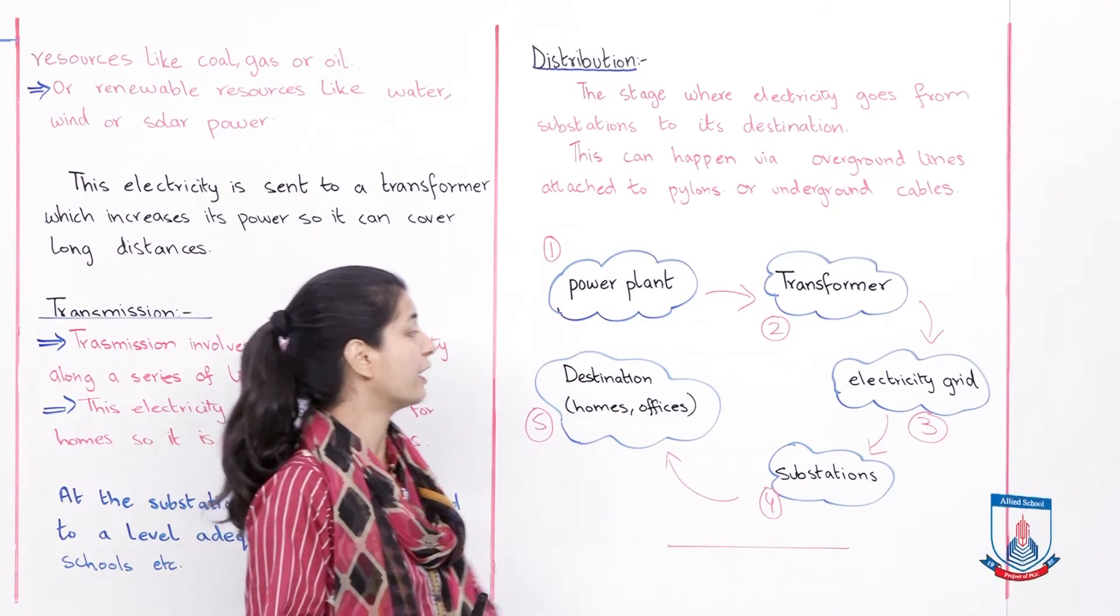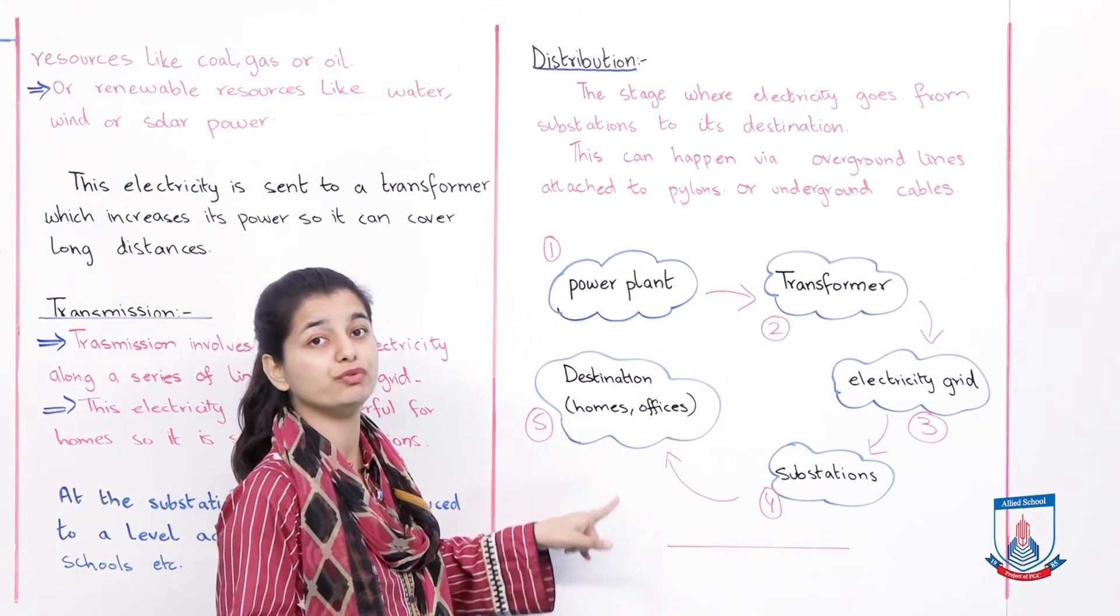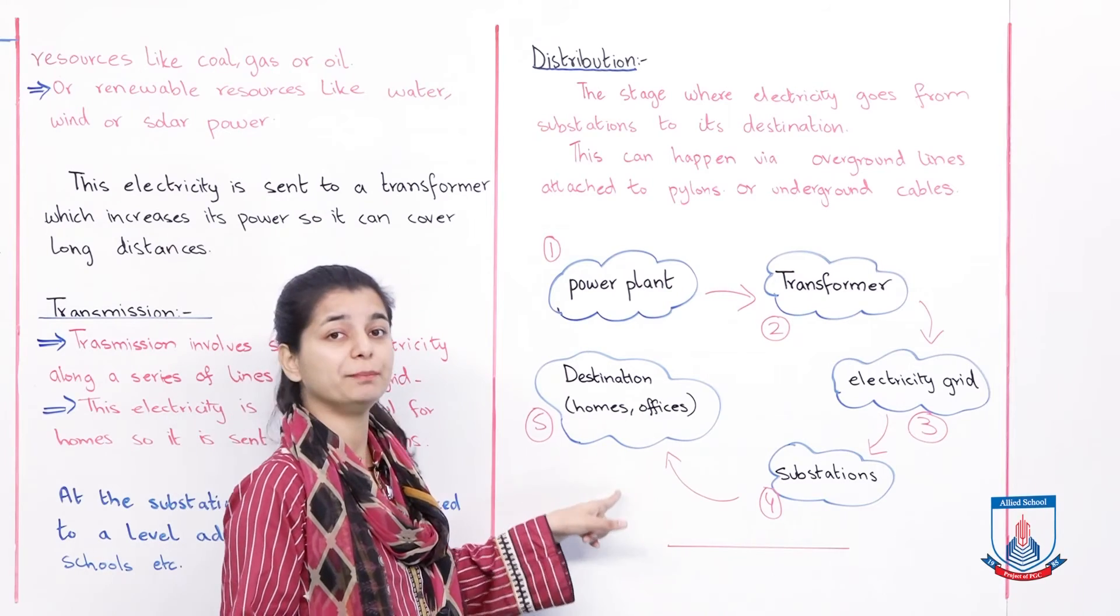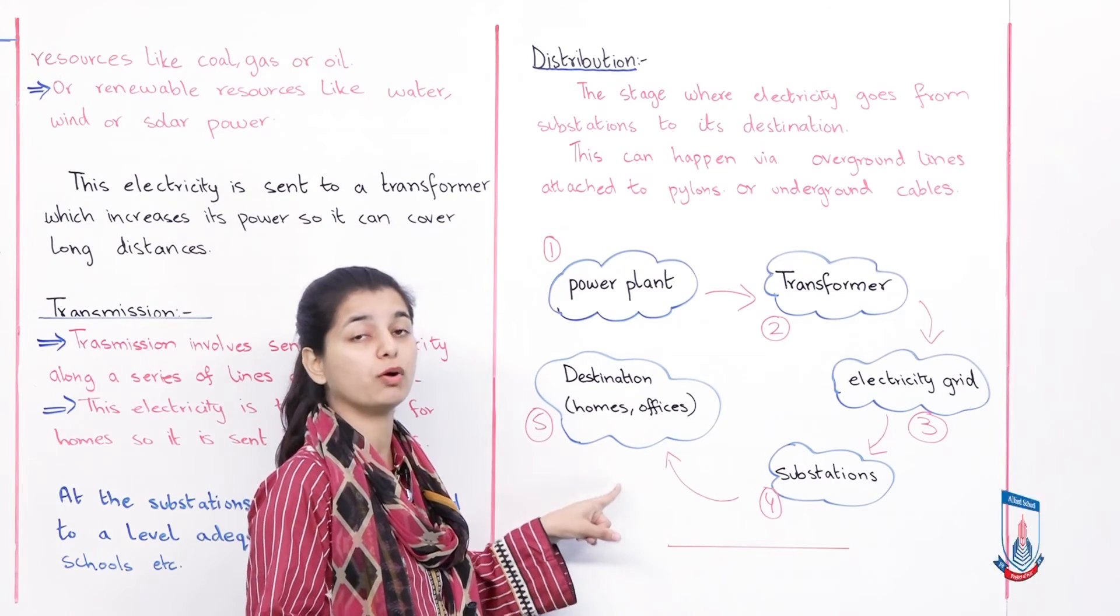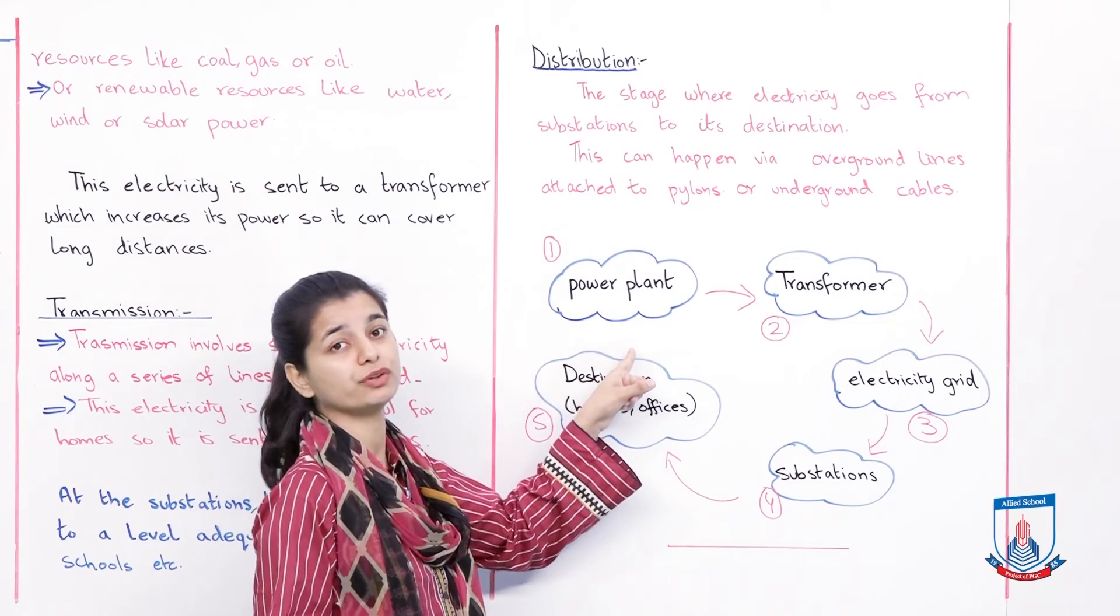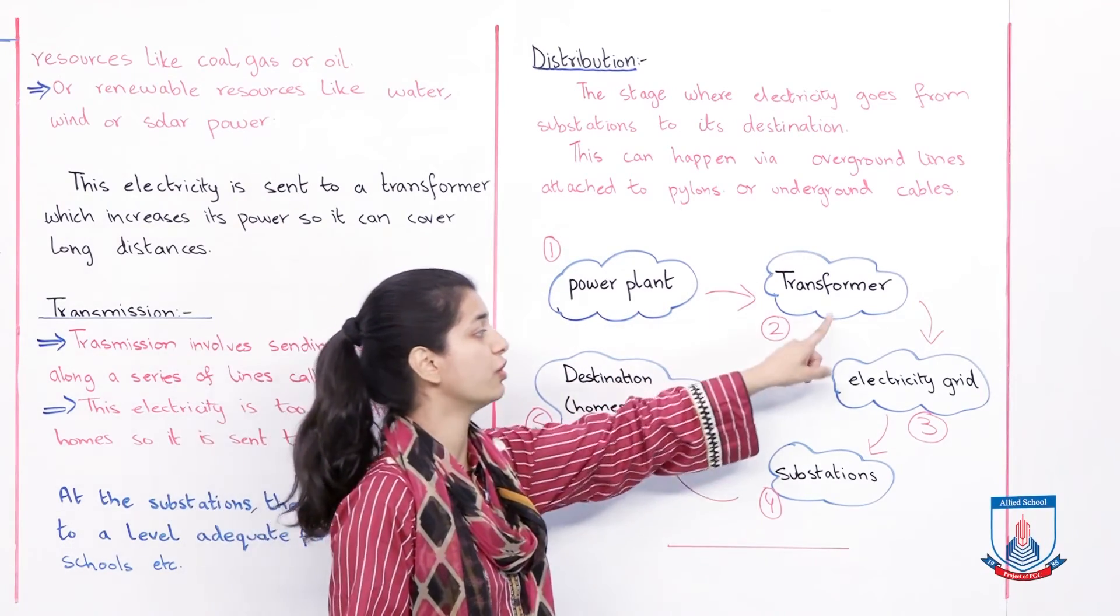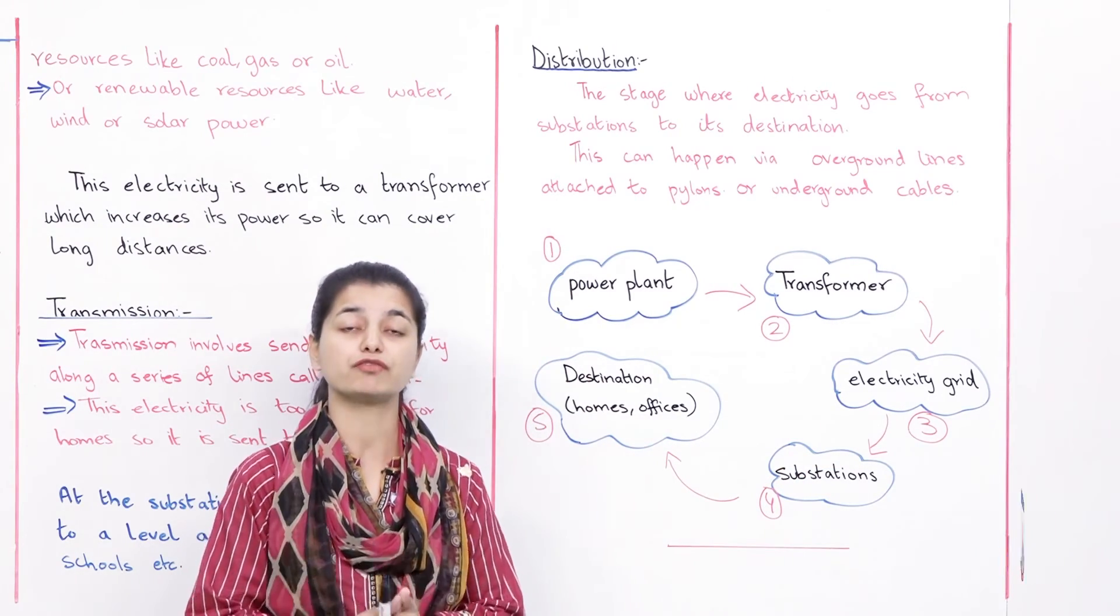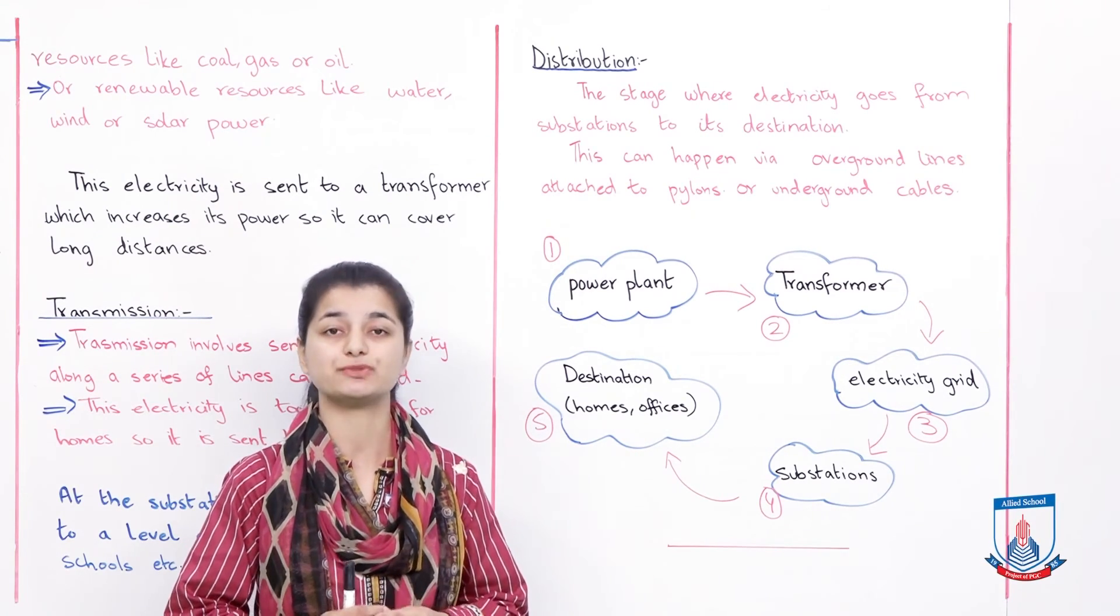And finally, what's the destination? Your home. So in these simple five steps - not simple actually, because the actual process is very technical and involves a lot of effort - but it's not that hard to remember where electricity starts from: power plants. After crossing all these different points on its way, it reaches your home. So that's it for how electricity gets to your home. We've covered this unit and this is pretty much the end of your chapter.